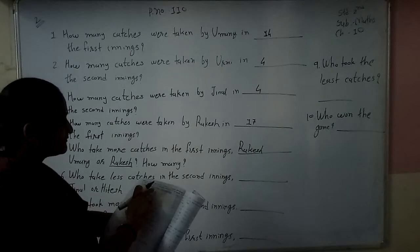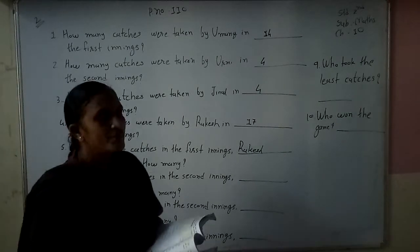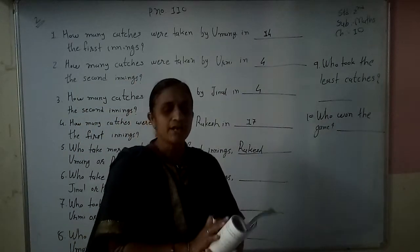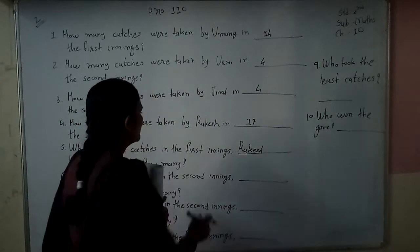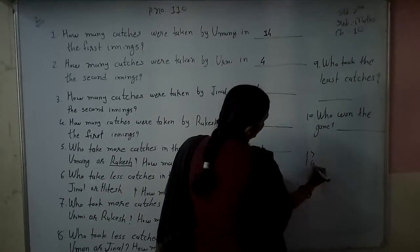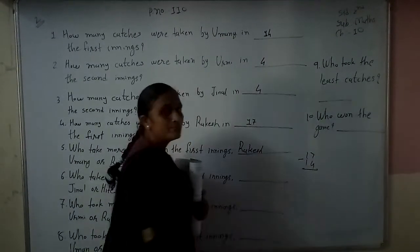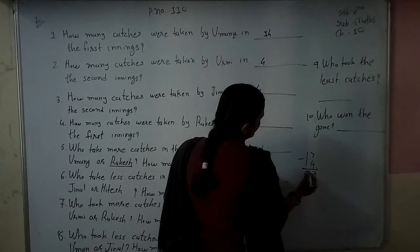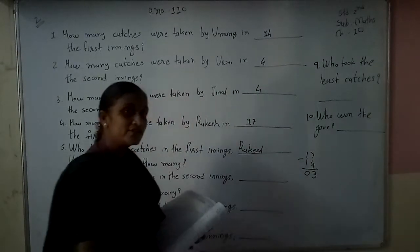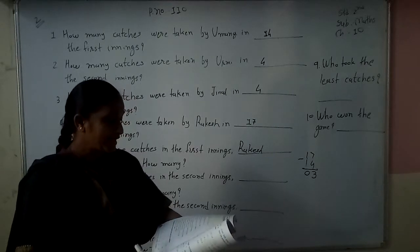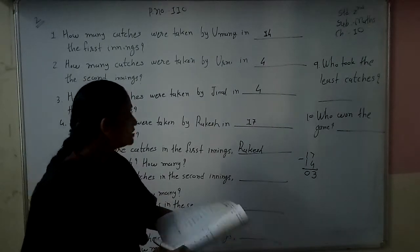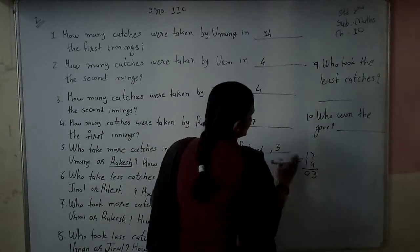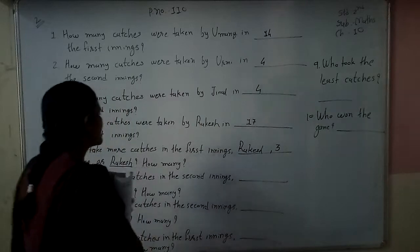How many more catches did Rakesh take than Umang? Rakesh has 17 catches, and the difference is 17 minus 14, which equals 3. So Rakesh took 3 more catches than Umang in the first inning. That is the correct answer.